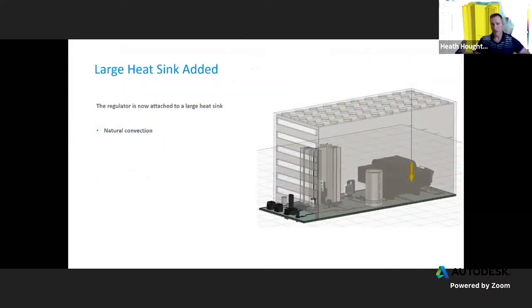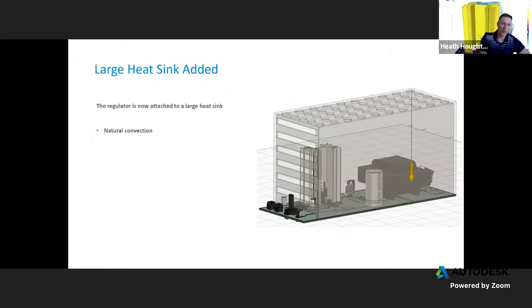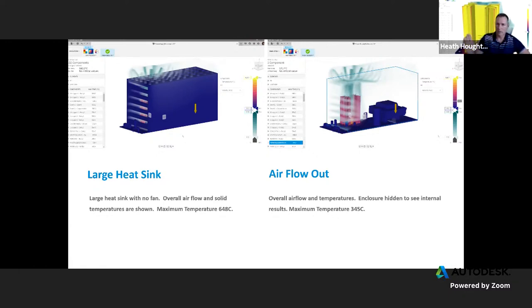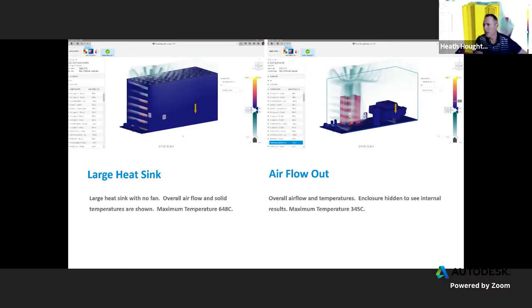The next step is: what if we just add the heat sink? If it's now attached to a large heat sink with natural convection, does that buy us a lot? We can see the airflow — the green is the airflow overall and the yellow is the temperatures. But even with that, it's still way too hot — nearly 650°C maximum temperature. So still too hot.